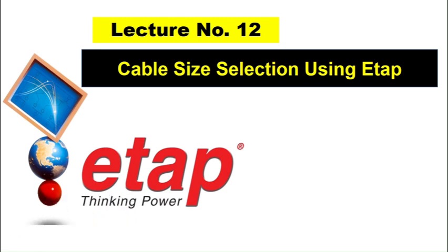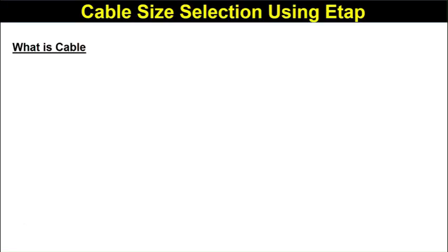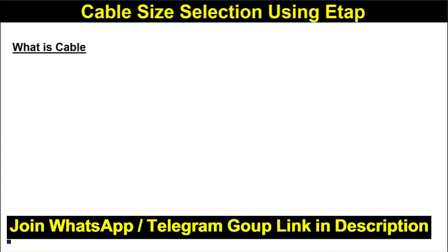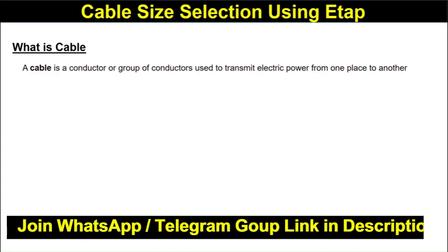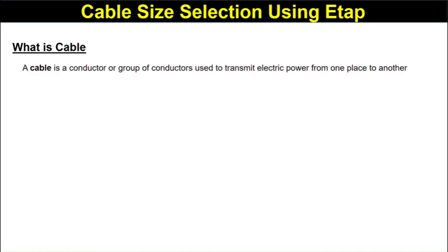First of all, we will see what is a cable. A cable is a conductor or a group of conductors used to transmit electrical power from one place to another place. Now, what is the basic construction of the cable?